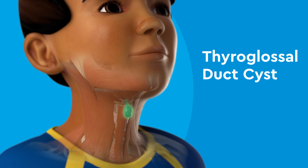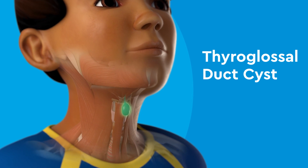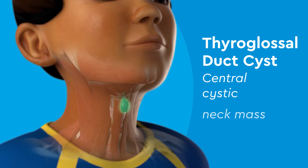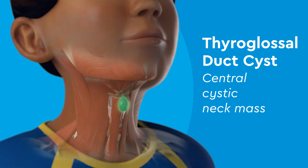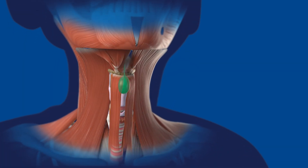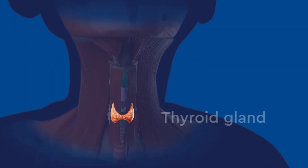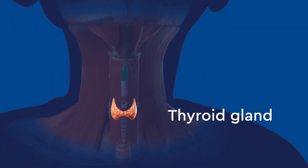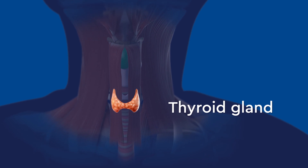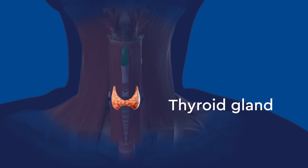A thyroglossal duct cyst is an example of a central cystic neck mass. This type of cyst grows from the structures that form the thyroid gland, an organ in the neck that helps control metabolism.